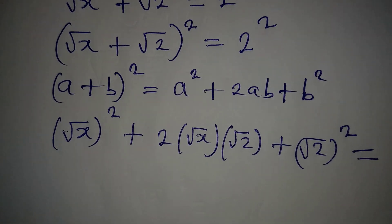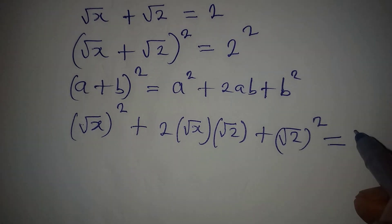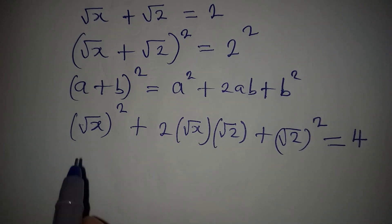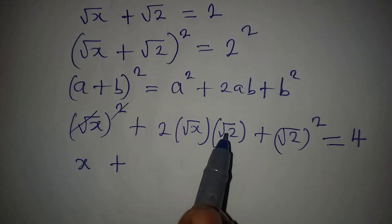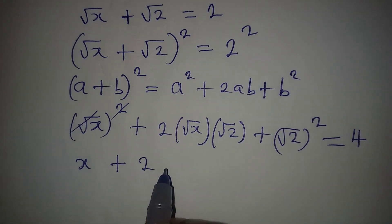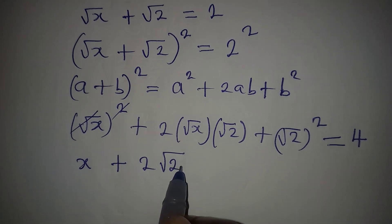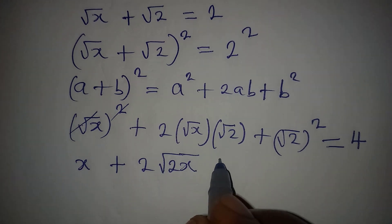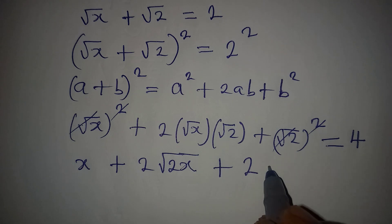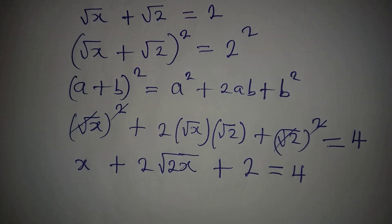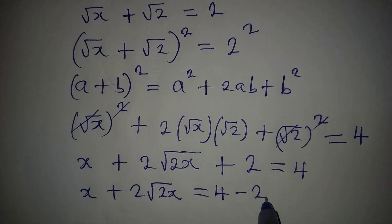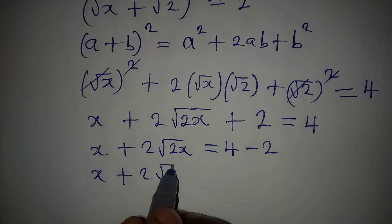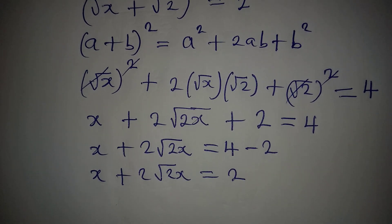The whole expression equals 4, since we have 2² on the right. Now (√x)² gives x, and (√2)² gives 2. The middle term 2·√x·√2 simplifies to 2√(2x). So we have x + 2√(2x) + 2 = 4. Collecting like terms: x + 2√(2x) = 2.